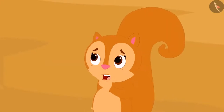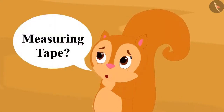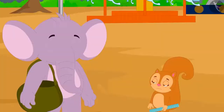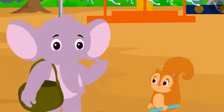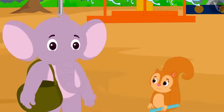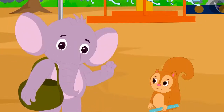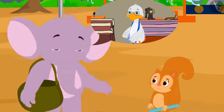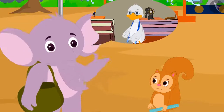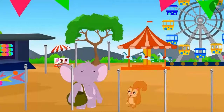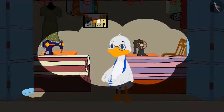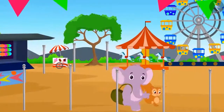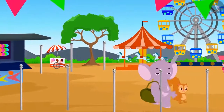Chanda told him that she has never seen a measuring tape and asked if he could show her. Appu then told her that he doesn't have it at that moment, but if she met him at uncle's shop the next day, he would borrow the measuring tape from uncle and show it to her. Chanda agreed. The two decided to meet at uncle's shop the next day and went to their respective homes.